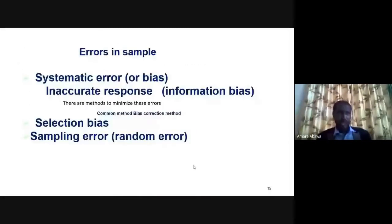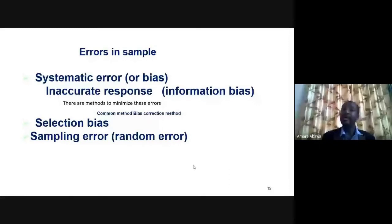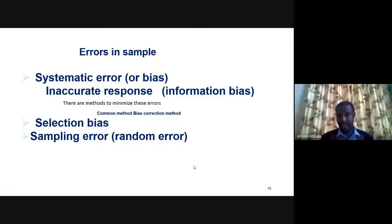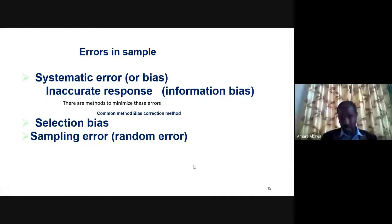A problem we usually face in sampling is that it is not free from error. As much as possible, we have to reduce the error, though committing some error may be inevitable. The question is: are errors tolerable? You could commit errors, but if they are within an acceptable range, they can be ignored. If beyond that range, the entire research finding could be discarded — so maximum care must be taken when sampling, especially when generalizing.